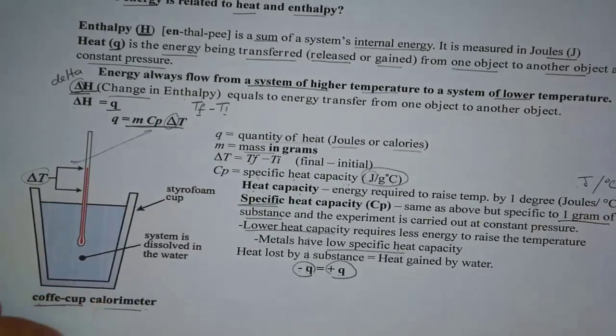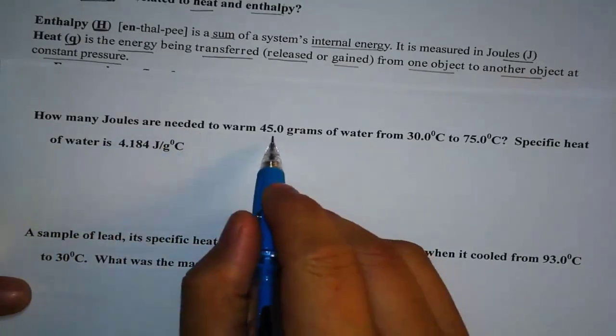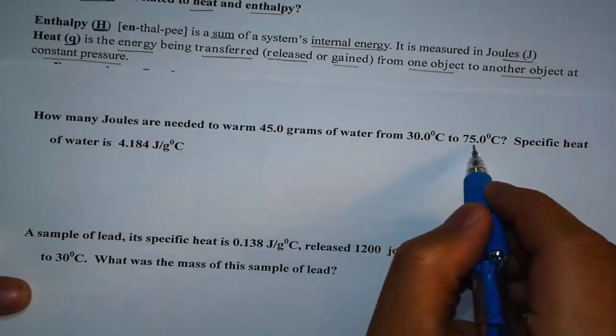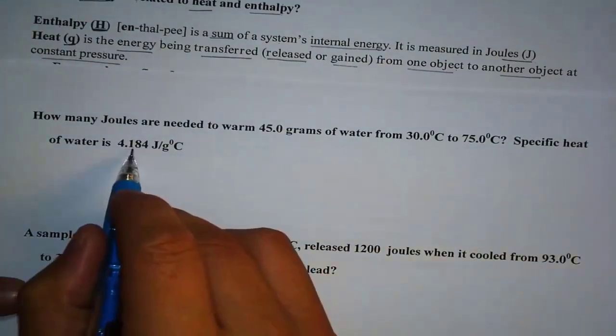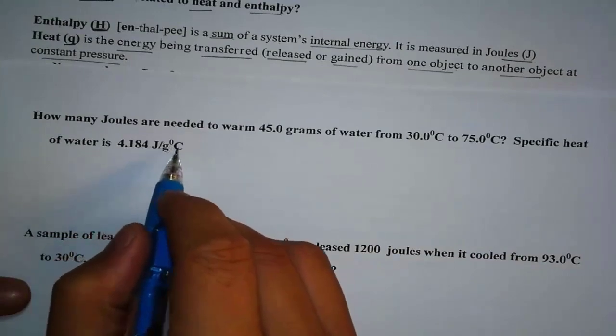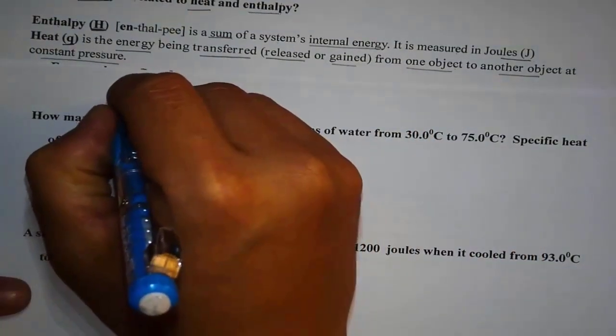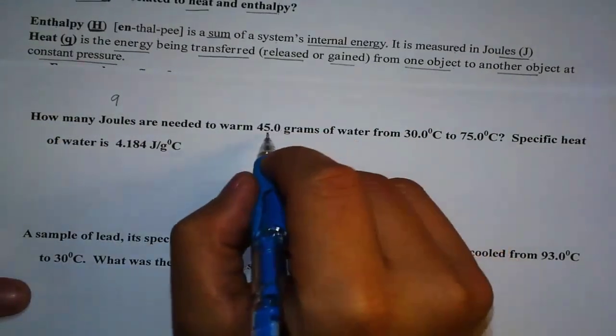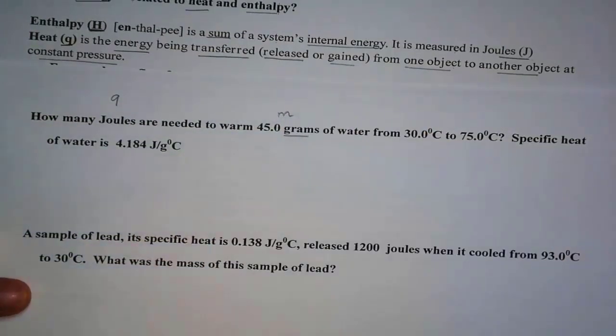Now let's try one problem together. How many joules are needed to warm 45 grams of water from 30 degrees Celsius to 75 degrees Celsius? The specific heat of water is 4.184 joules per gram Celsius. So if we read this problem, we know that we are looking for joules, so that would be Q. Easy, isn't it? And we know that that would be your mass because it's a gram right there.